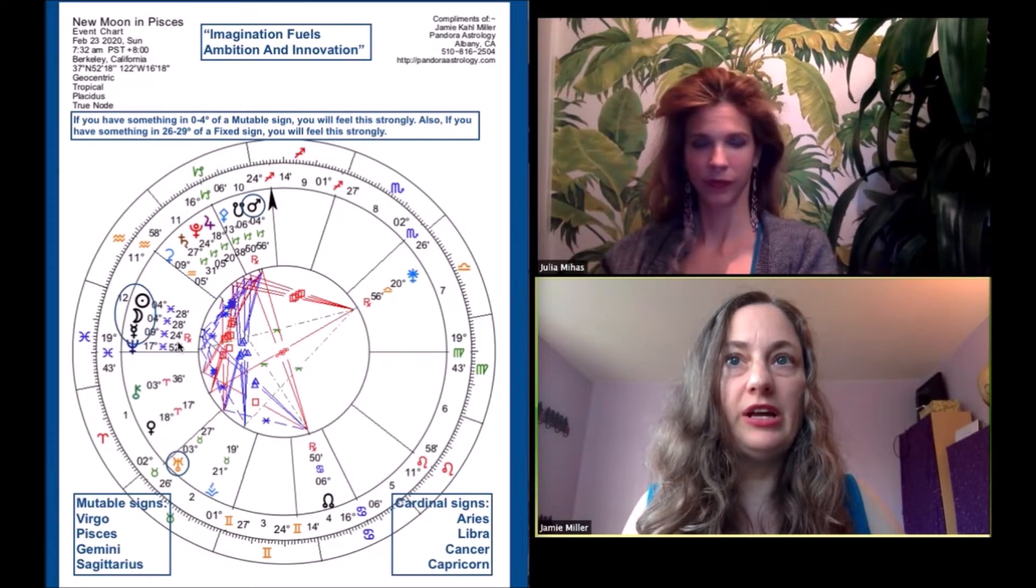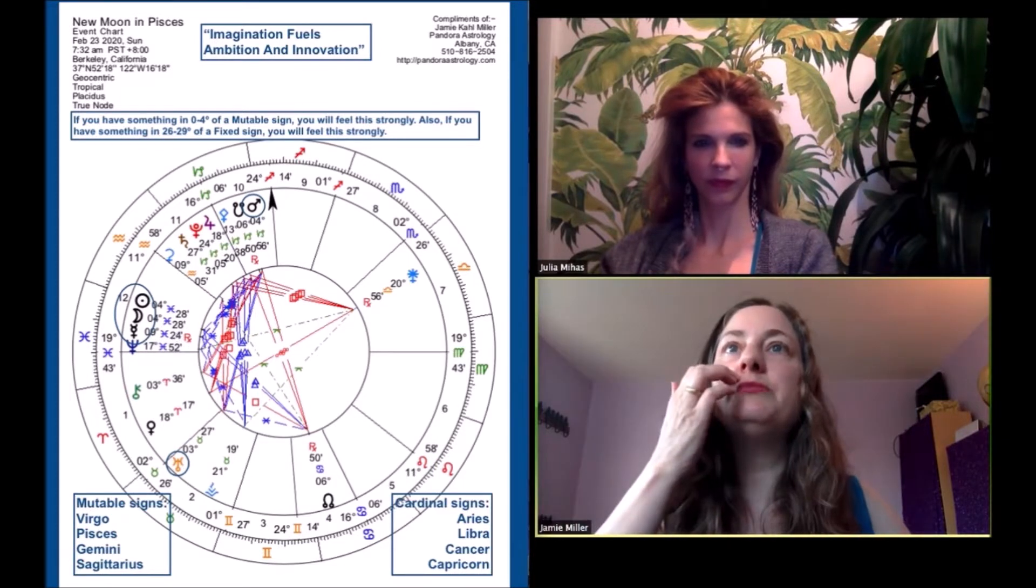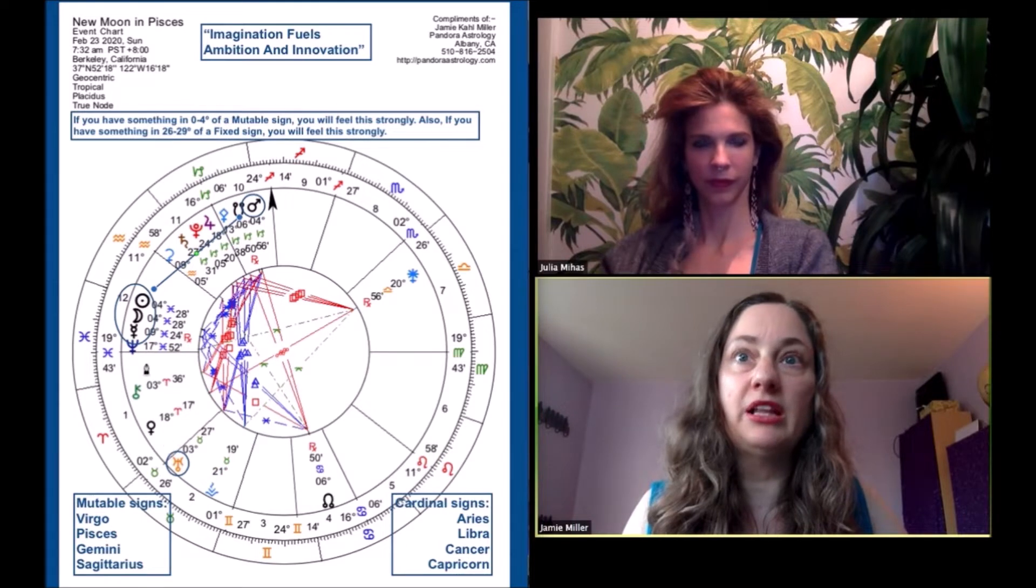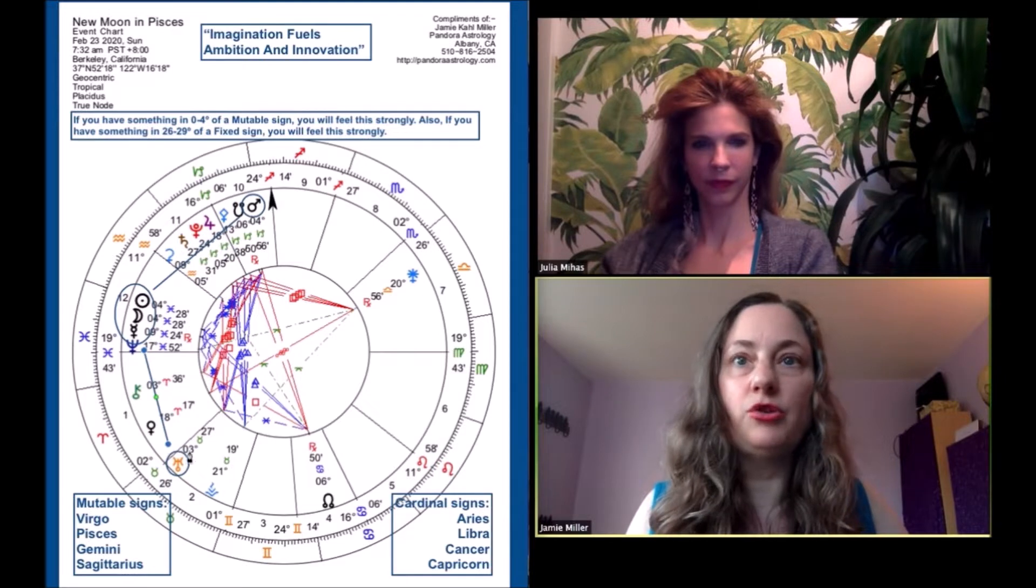And this moon has some planets with it, particularly Mercury is retrograde in Pisces at the time. And then also this moon has quite a bit of help, some harmonious connections with Mars right here in Capricorn, where Mars loves to be, so that's going to be nice to talk about. And then also Uranus in Taurus.